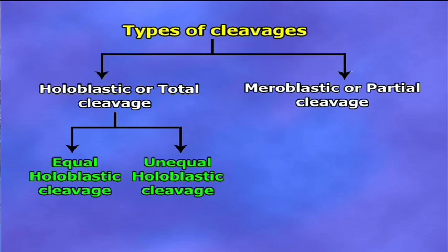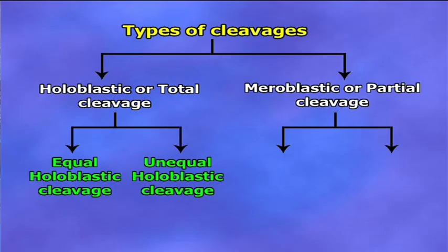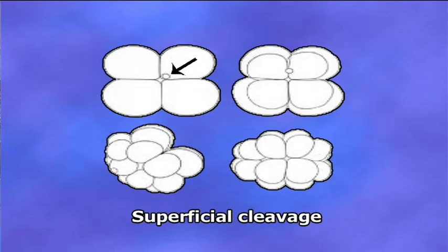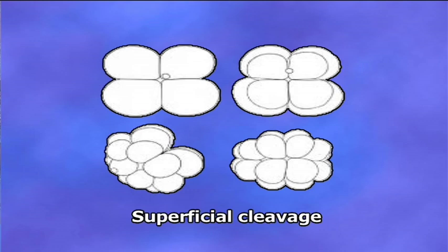Meroblastic or partial cleavage: in meroblastic cleavage, the division furrow divides only a small amount of cytoplasm at the margin or at the animal pole of the egg; most of the yolk remains undivided. This type of cleavage occurs with macrolacetal or polylacetal eggs. It is of two types. Number one, superficial cleavage: in many arthropods, at the beginning of cleavage, the nuclei found in the center of the yolk divide frequently; the daughter nuclei move away from the center and become surrounded by cytoplasm. When the nuclei reach the surface of the egg, the surrounding cytoplasm fuses superficially and is later subdivided by furrows.